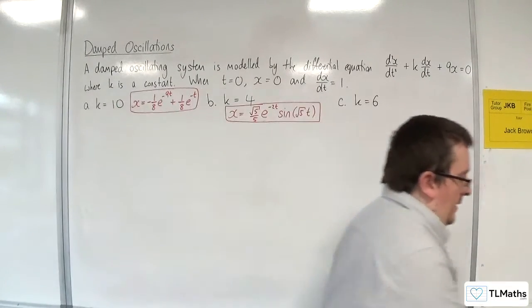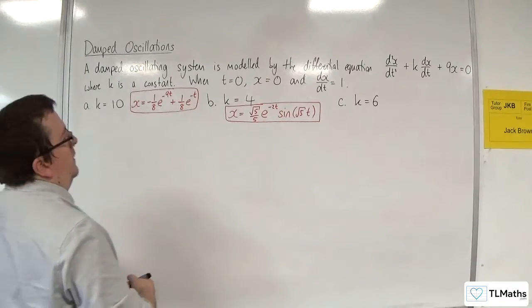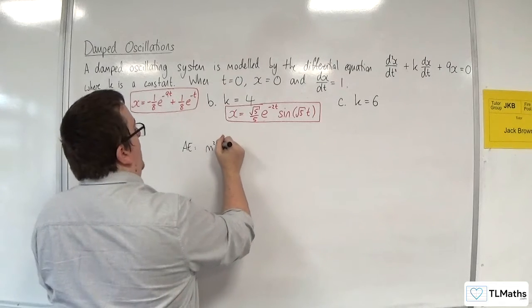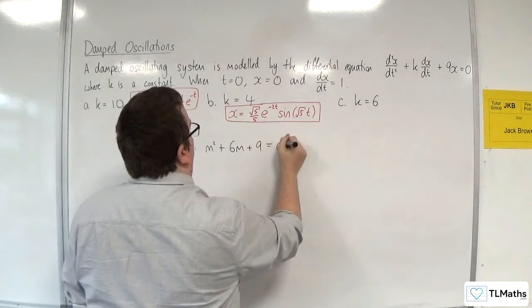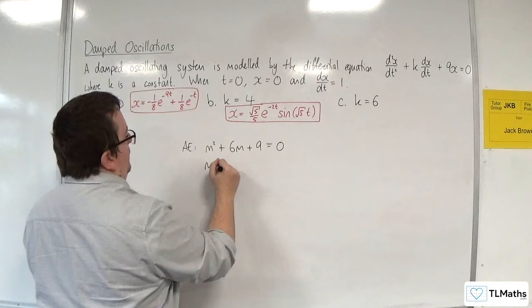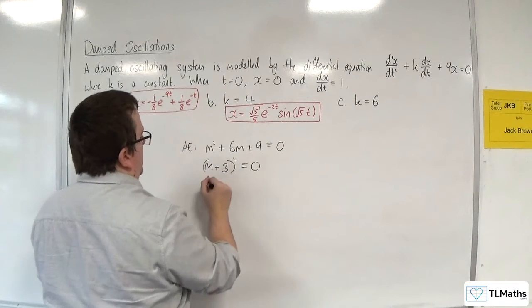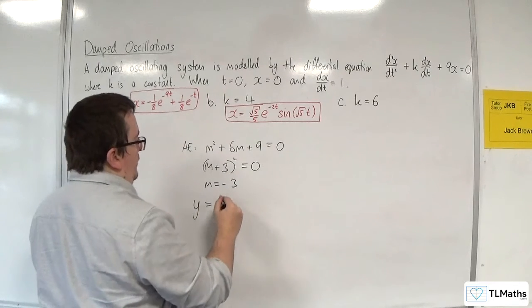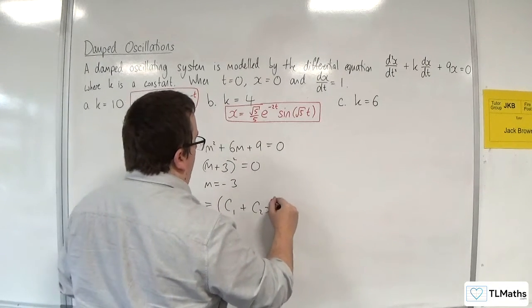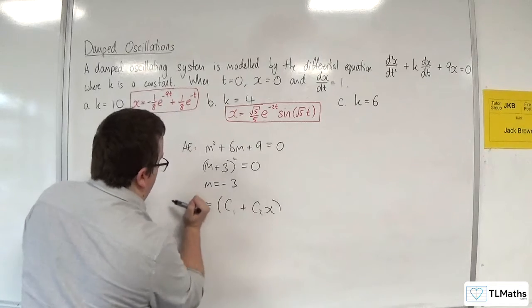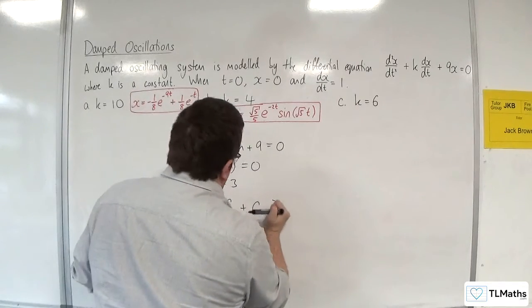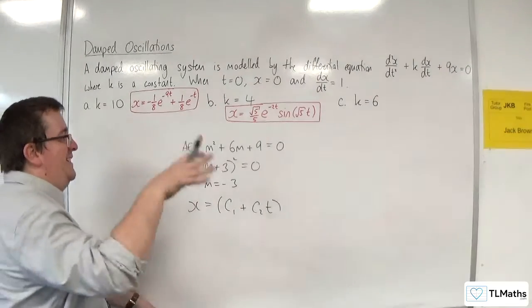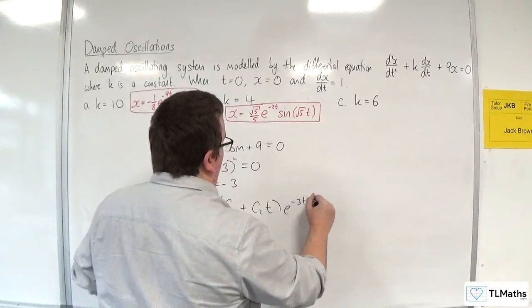Now let's look at k equals 6. The auxiliary equation is m² + 6m + 9 = 0. This is a perfect square: (m + 3)² = 0, so m = −3 (repeated root). The general solution is x = (c₁ + c₂t)e^(−3t).